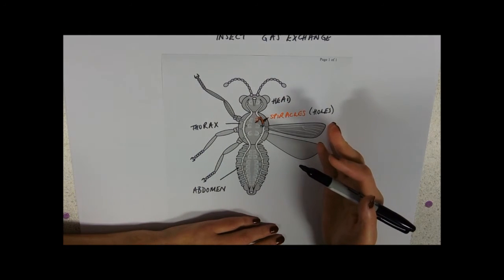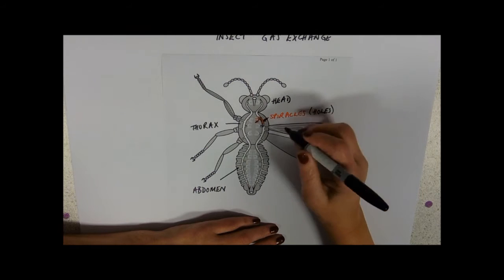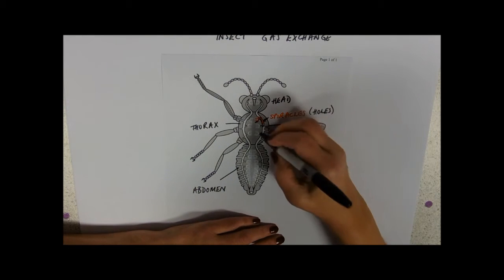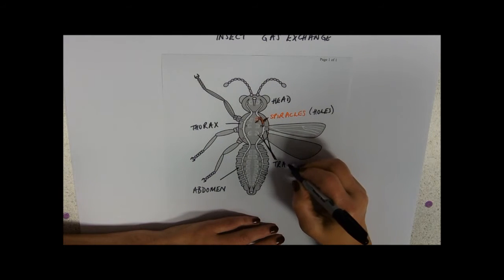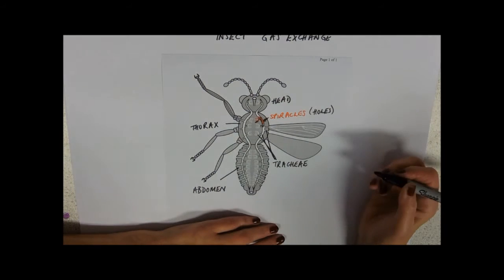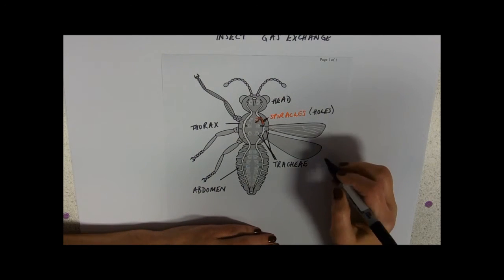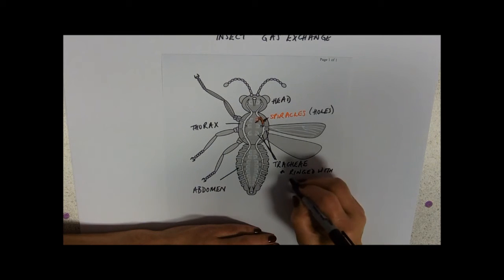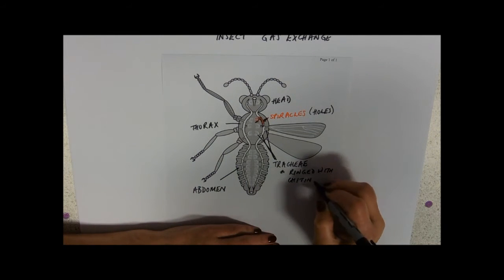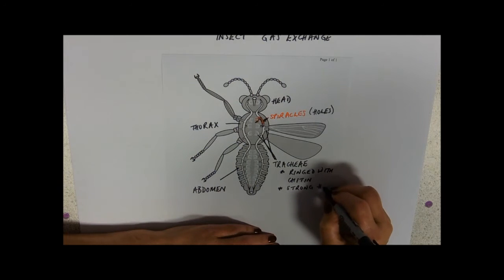Those then branch down into tubes called, so these tubes here, these bigger tubes and these ones here are all called tracheae. Now tracheae is spelt like trachea with an e on the end, so which is why we pronounce it tracheae. So these again are just pipework. So these tracheae are ringed with chitin. What do we know about chitin? We know that it's strong, it's going to hold the tubes open.